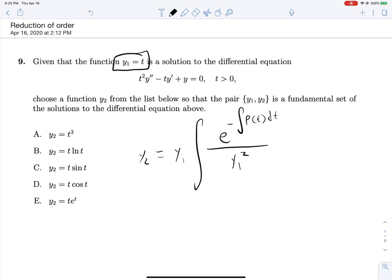So in this case we'll need to divide by t squared on all of our terms to get that p of t correct. So in our case p of t is negative 1 over t.